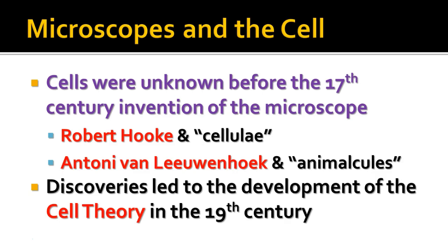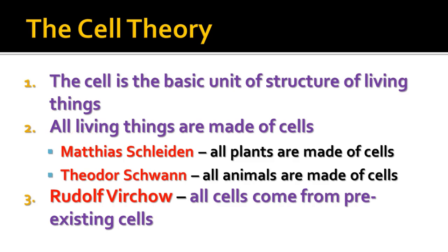Lots of other people began buying and making microscopes and looking at things. Over the course of the next 200 years or so, the discoveries that were made led to the development of what we call the cell theory in the 19th century. Here are the three parts of the cell theory and the people responsible for them.